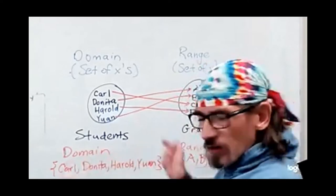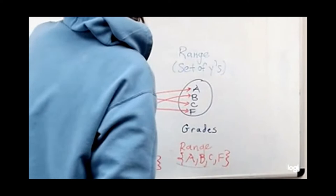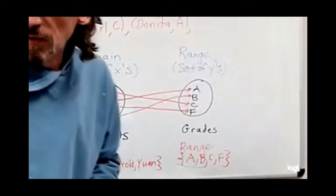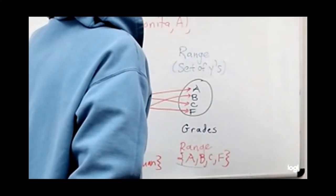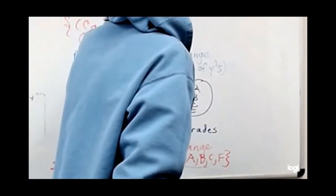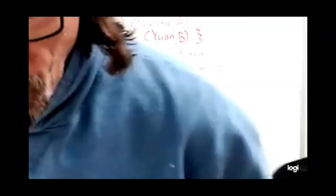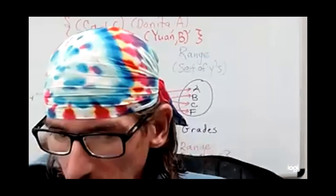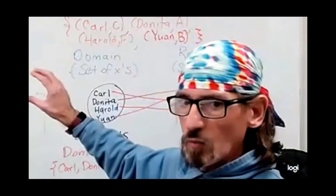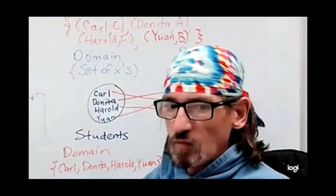If I've written the relation as sets of ordered pairs, Carl with a C, Donita with an A, Harold with an F, and Juan with a B, then we see no X value is repeating. And so not only is that a relation, but it's also a function. Each X is going to exactly one Y when we've written it this way, or even in the picture, we are not seeing repetition of an X going to multiple Y values.